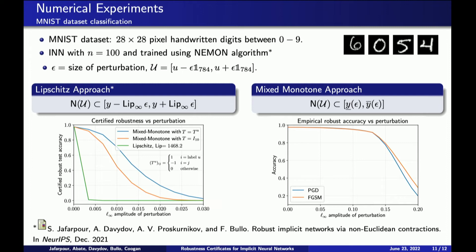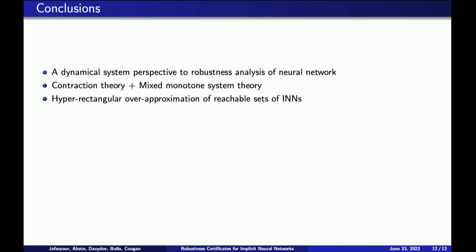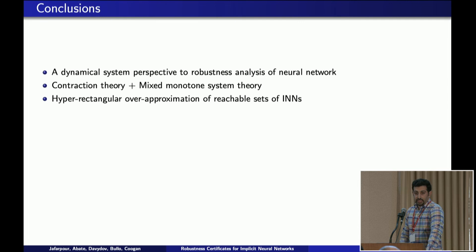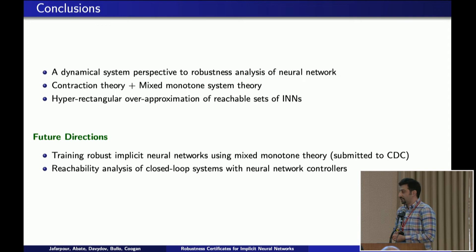In conclusion, we use a dynamical system approach for studying robustness of neural networks. In particular, we use two frameworks from dynamical systems — contraction theory and mixed-monotone system theory — and combine them to find hyper-rectangular over-approximations of INNs. For future directions, we consider applying these approaches to training robust neural nets and also to reachability analysis of a closed-loop system where the INN is a controller. Thank you.